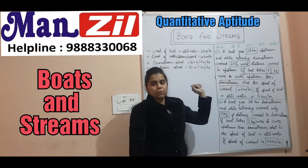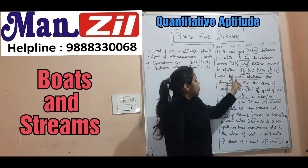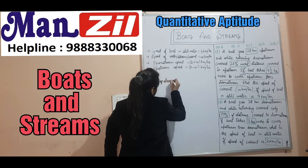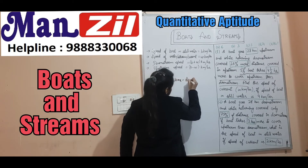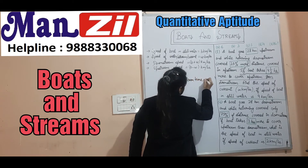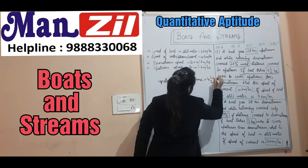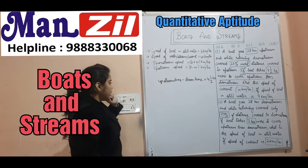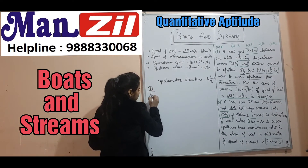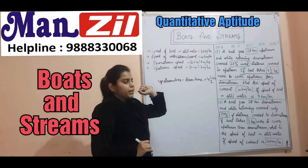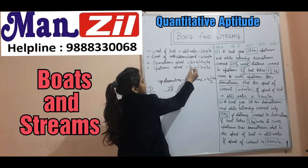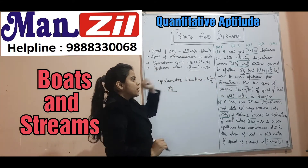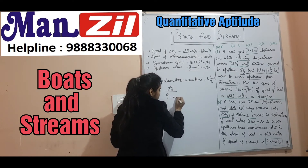We start from the underlined line: if boat takes 4 and 1/2 hours more to cover upstream than downstream, that means upstream time minus downstream time equals 4 and 1/2 hours. The formula for time is distance upon speed. Upstream distance is 28 km. Upstream speed is denoted by B minus W. Since B is 9 and W is to be found, upstream speed becomes 9 minus W.